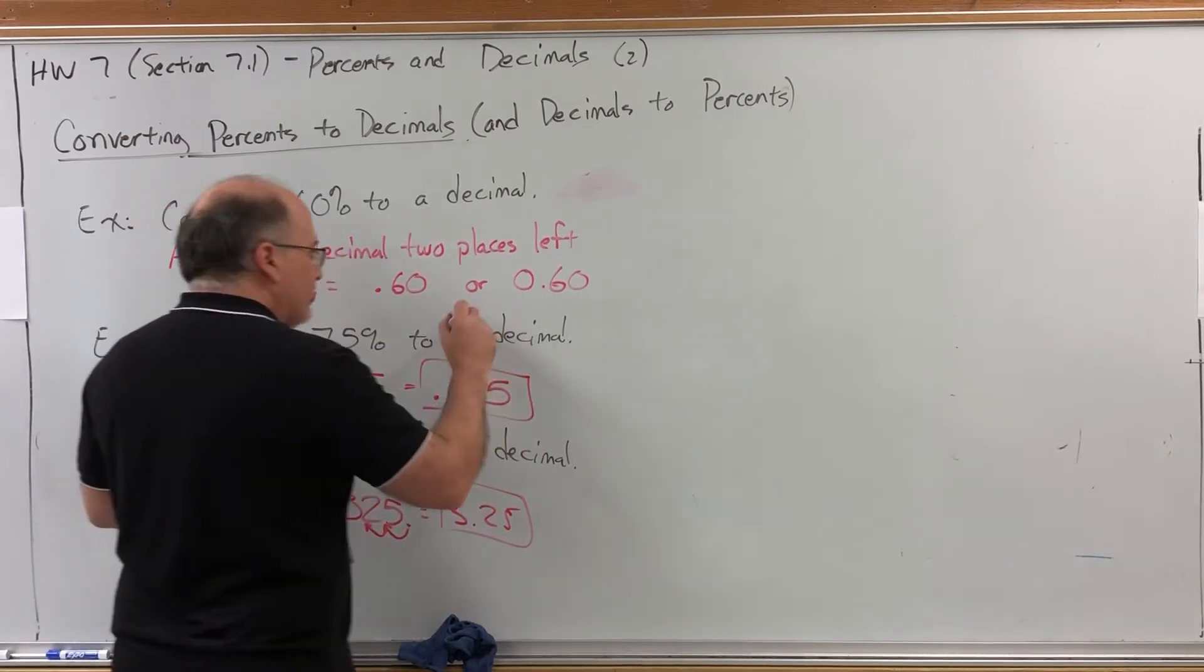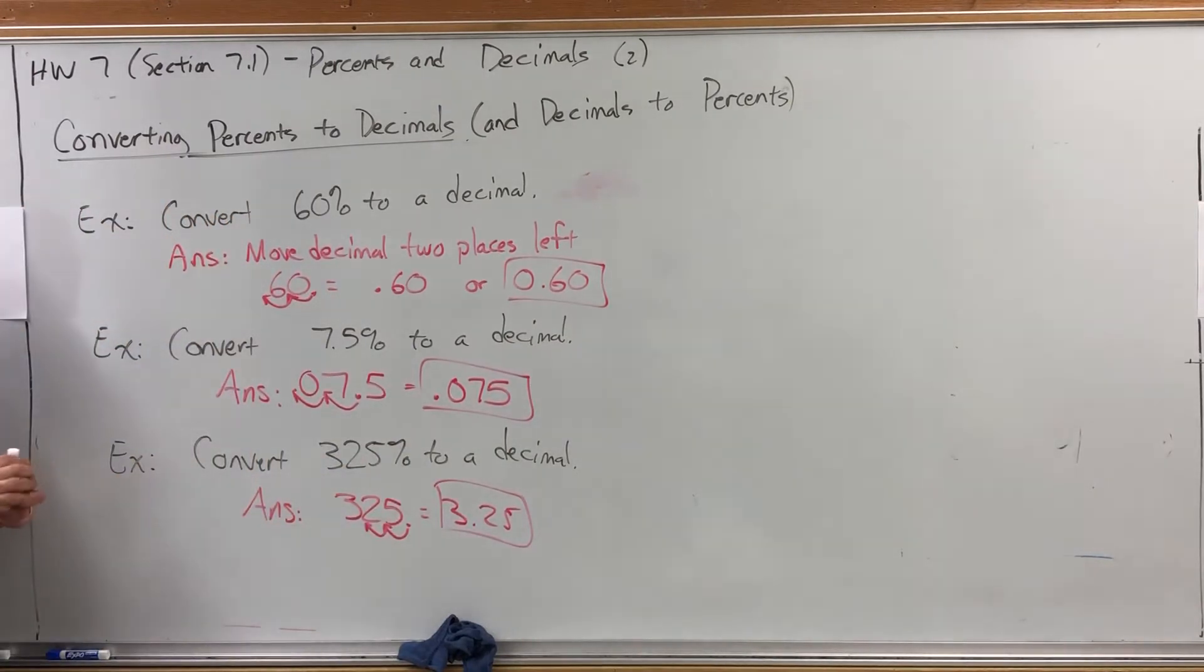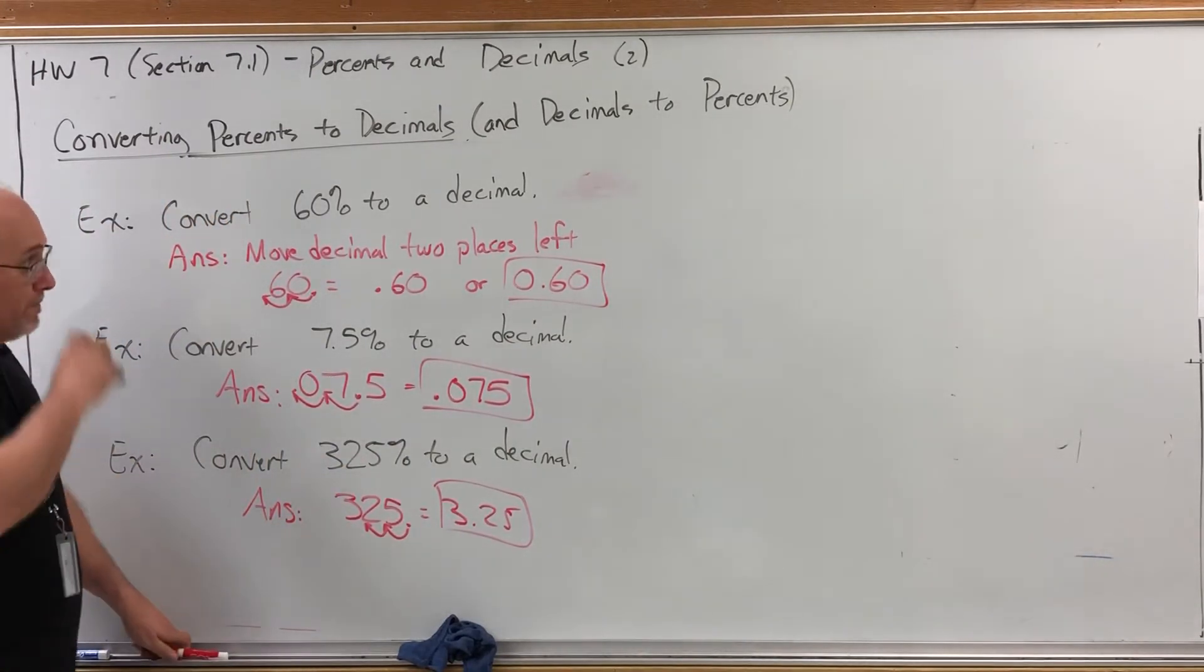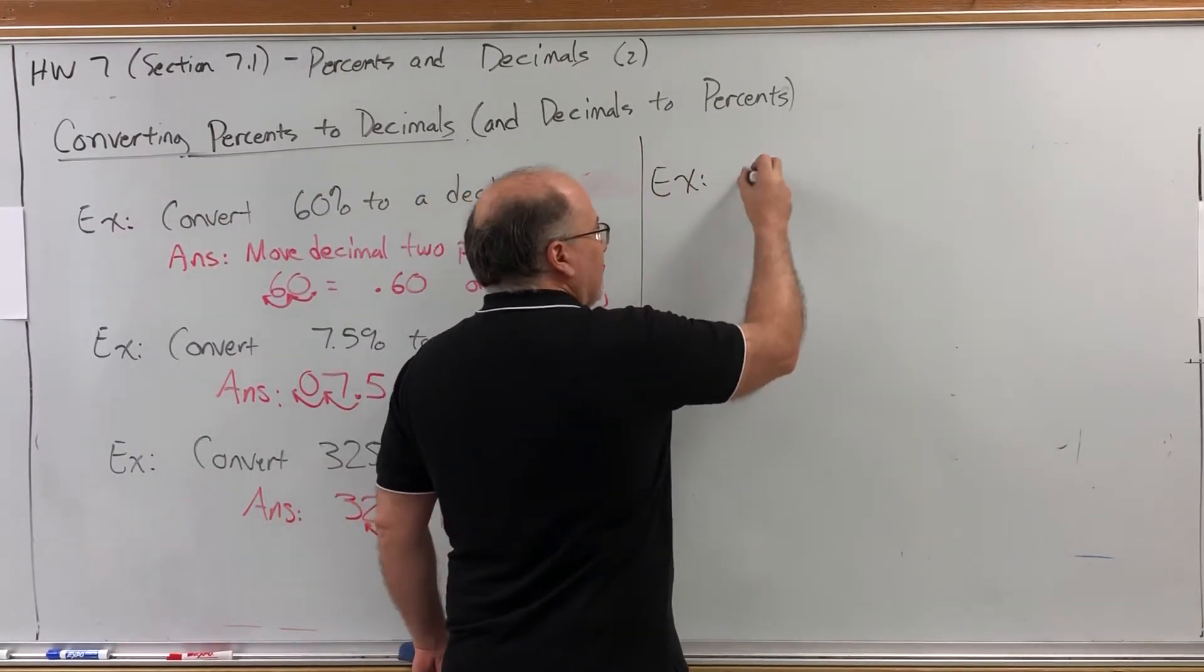So as you can see, converting a percent to a decimal is really easy. Just find the decimal, move it two places to the left, and drop the percent. But how do we do it the other way around? In other words, how do we convert a decimal to a percent?